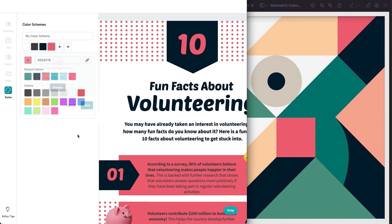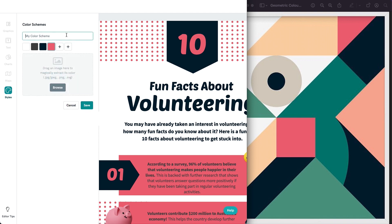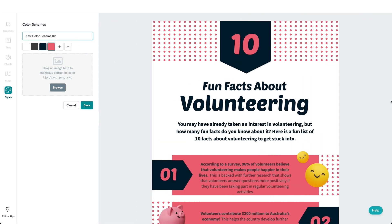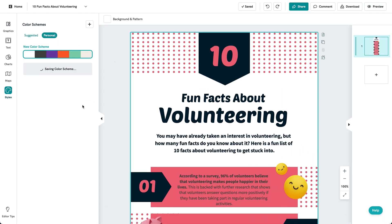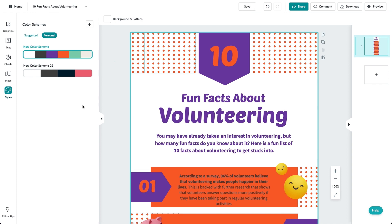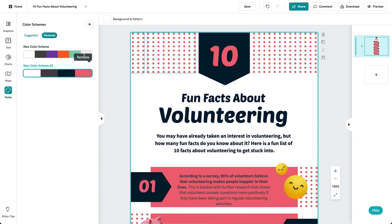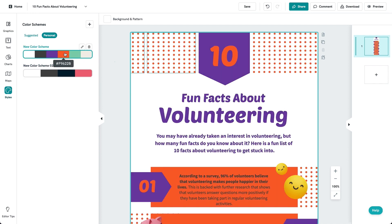Once you have done that, you can add this into your color scheme and save it again. And that's how you can create personal color schemes by using the color picker feature on PictoChart. Happy creating!